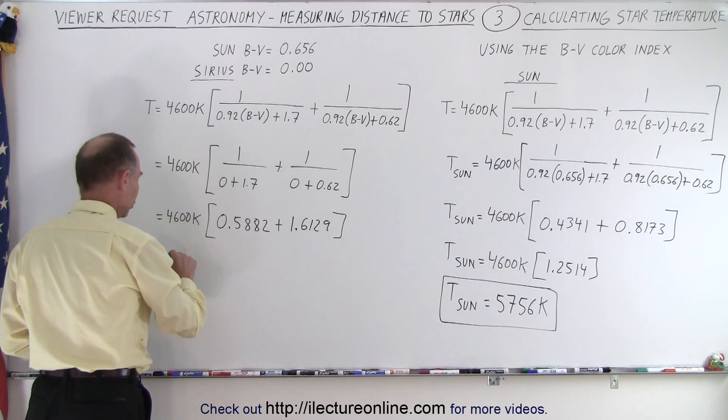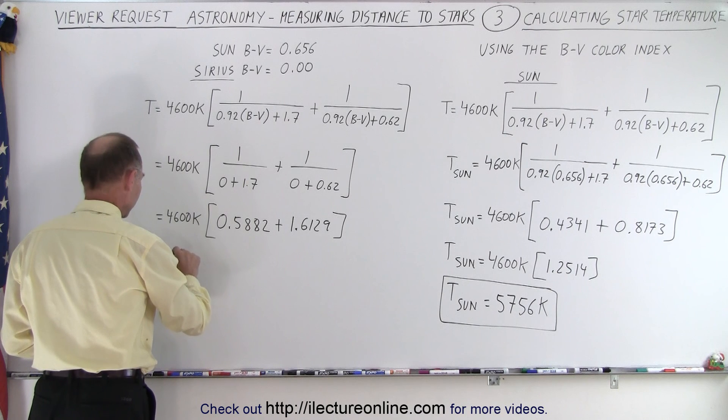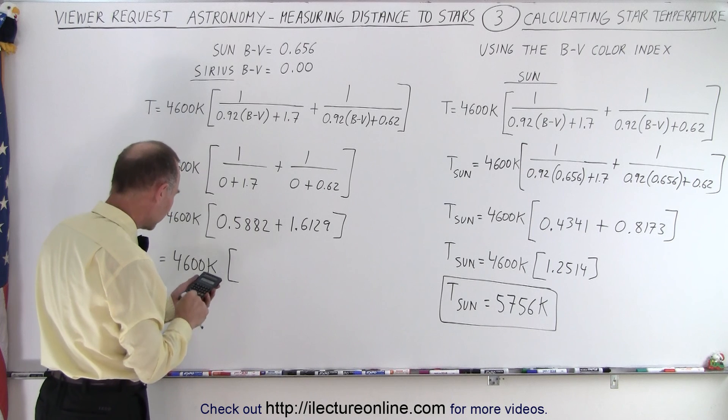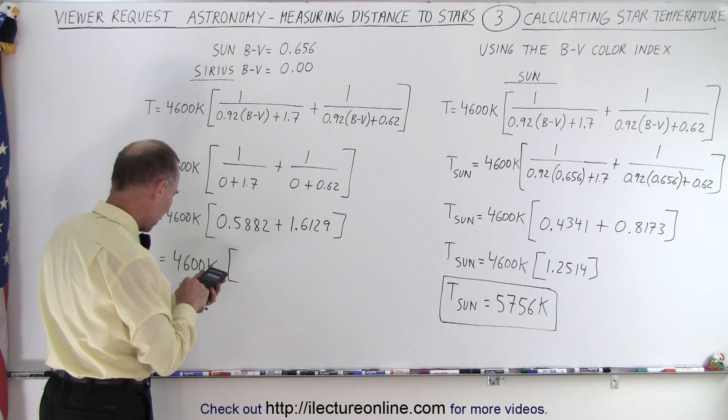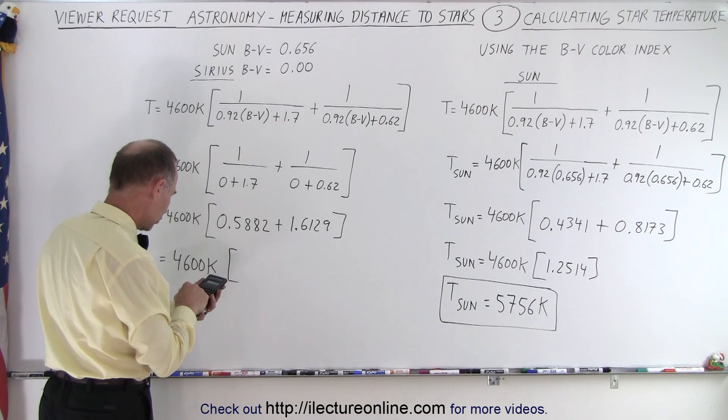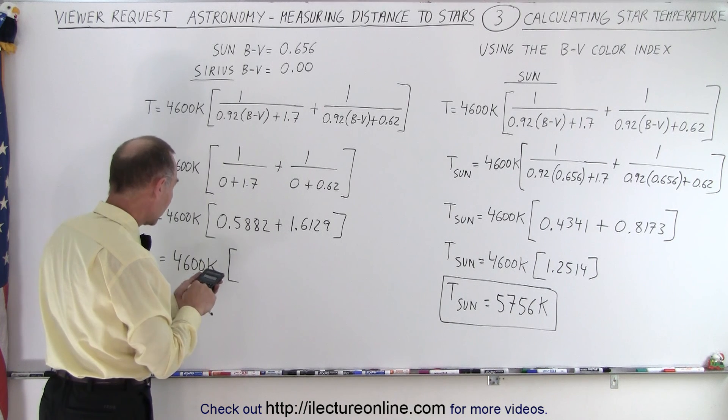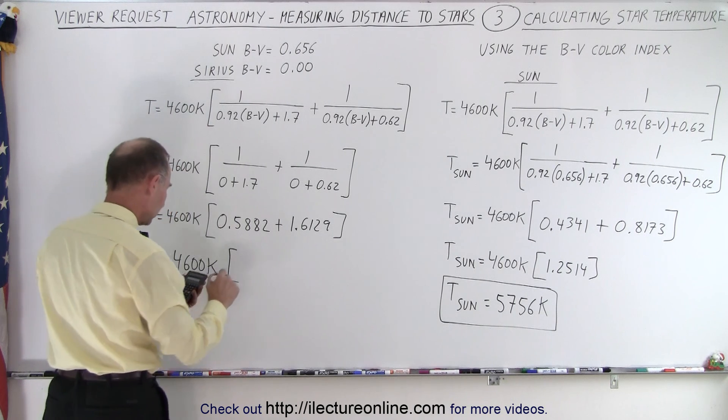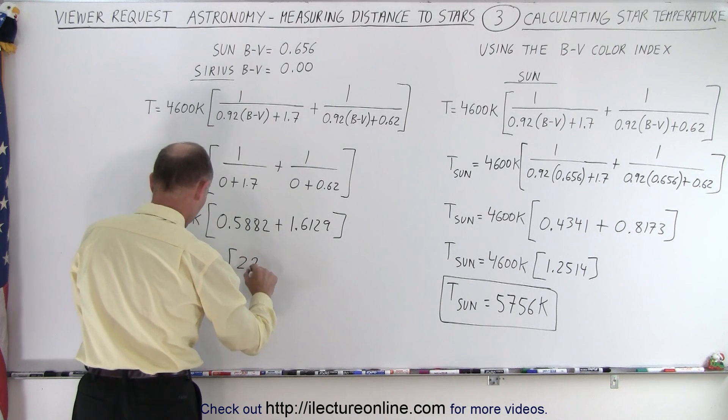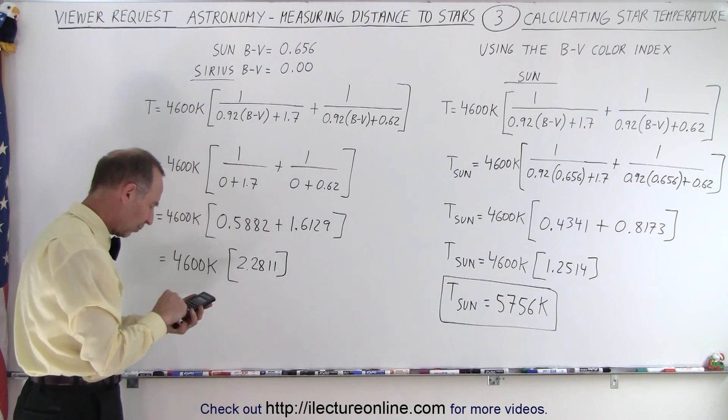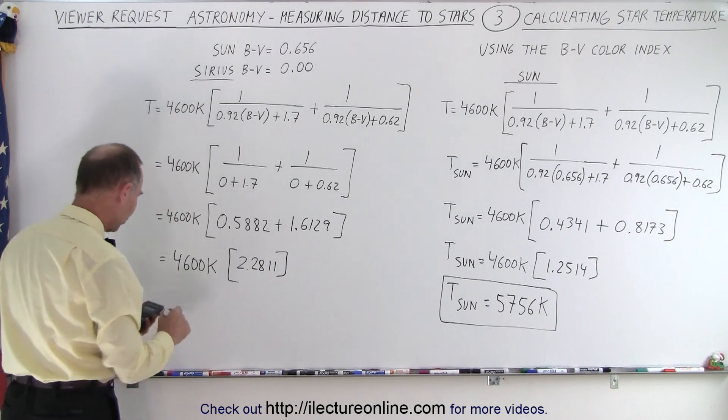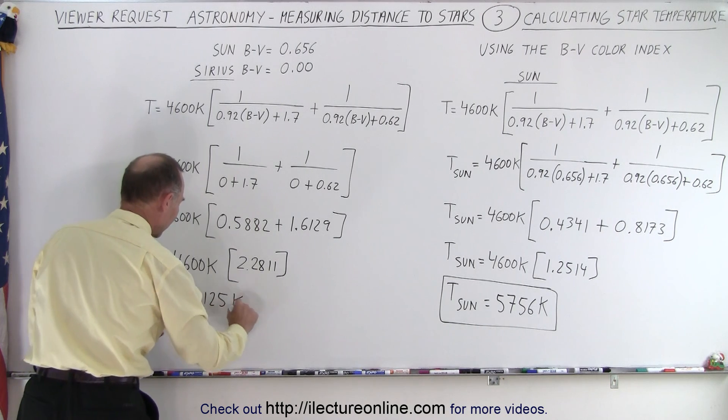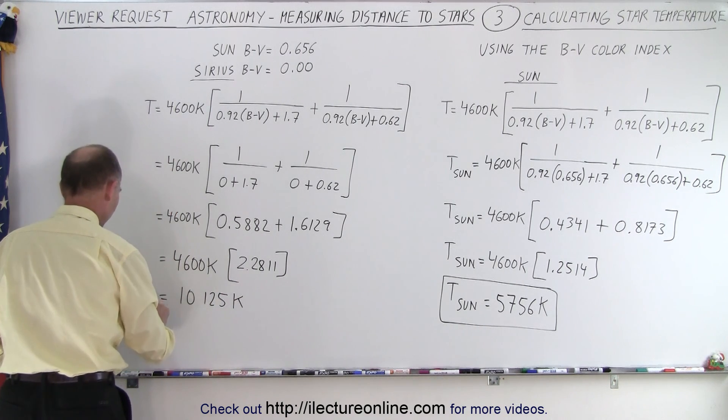And so this becomes equal to 4600 times, let's add those two together, 0.5882 plus 1.6129. So we get 2.2811 multiplied times 4600, and we have a surface temperature of 10,125 Kelvin. So that's temperature of Sirius.